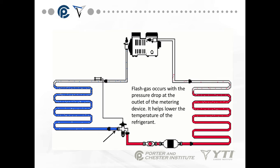Flash gas occurs with the pressure drop at the outlet of the metering device. Flash gas is basically a low-pressure liquid that immediately flashes off to a gas — a combination of liquid and vapor occurring right at the outlet of the metering device. It actually helps lower the temperature of that refrigerant.